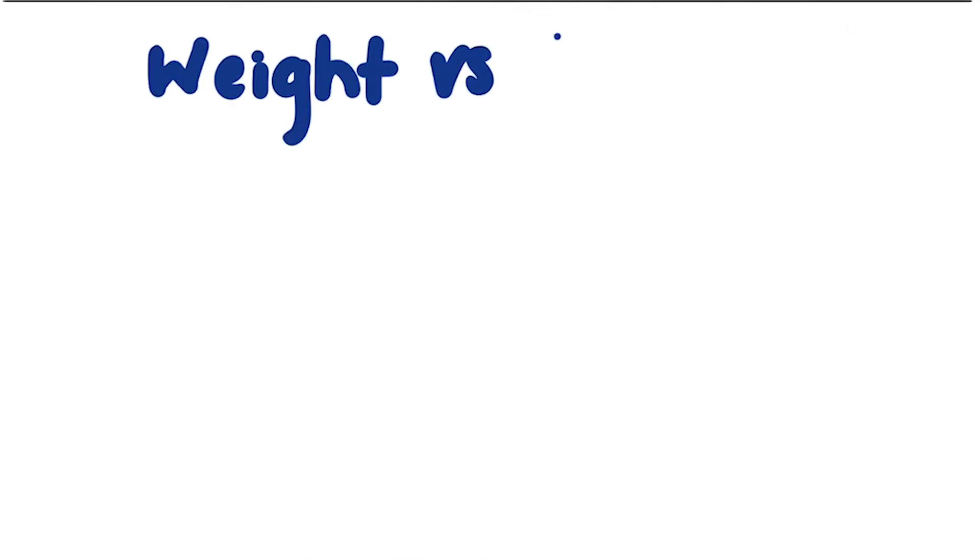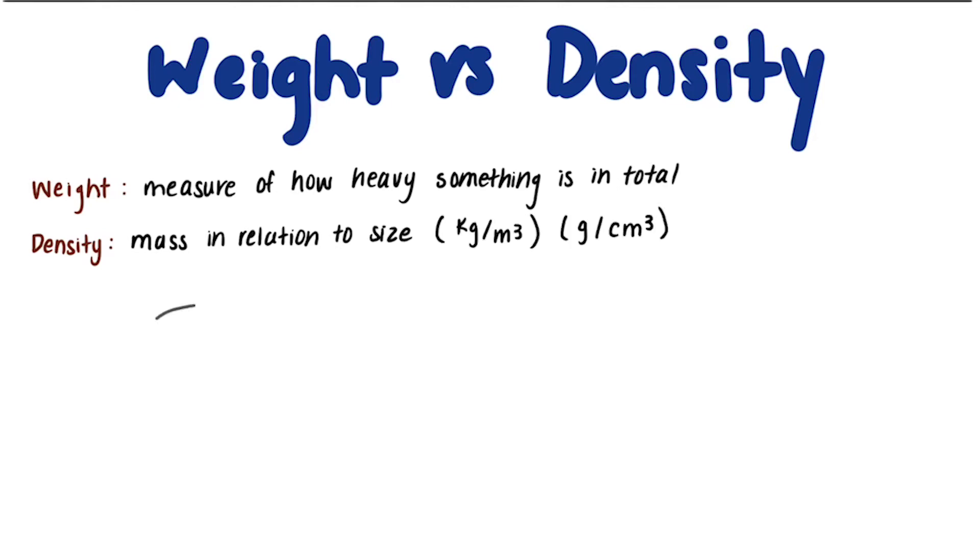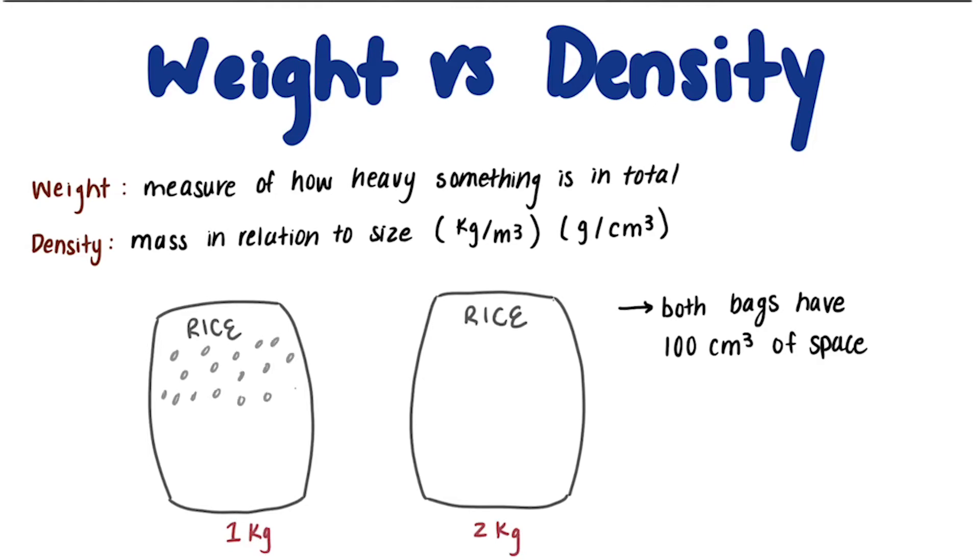It's easy to confuse the terms weight and density, so let me give you a simple explanation about their differences. Weight is a measure of how heavy something is in total. But density tells us its mass in relation to its size. While weight would be like just kilograms or just grams, density is kilograms per meters cubed, or grams per centimeters cubed. For example, we have two bags of rice, and they are the same size. However, one might be heavier than the other. We can say that the heavier one is denser because it has more rice stuffed into the bag. This also means that the denser bag of rice has less space between each piece of rice.